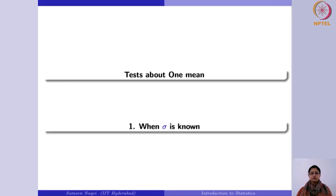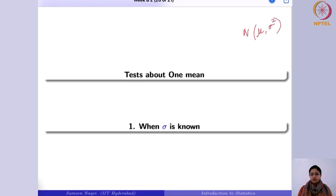Whenever we talk about the mean, we have two situations. In the normal distribution — Normal(μ, σ²) — when you are interested in the mean, sigma squared has two options: it can be known or it can be unknown. When it is known, the test statistic is different than when it is unknown. If sigma is known, the standard normal distribution comes into picture; if sigma is unknown, the t-distribution comes in.